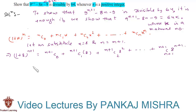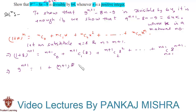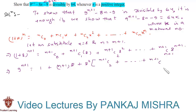This implies that 9 raised to n plus 1 equals (n+1) C 0 which is 1, plus (n+1) C 1 which is n plus 1 itself, times 8, plus taking 8 squared common from the rest of the terms, we have 8 squared times (n+1) C 2, all the way up to (n+1) C (n+1) times 8 raised to n plus 1.